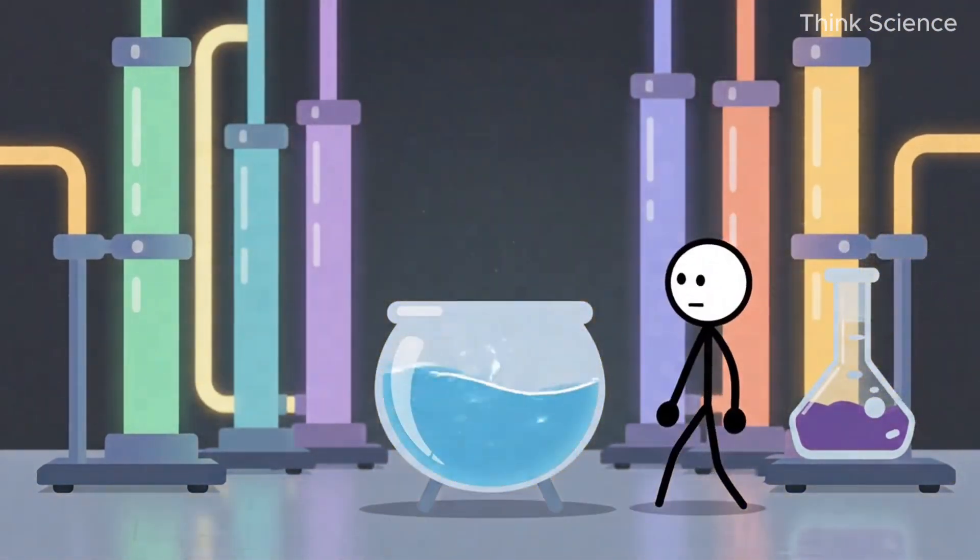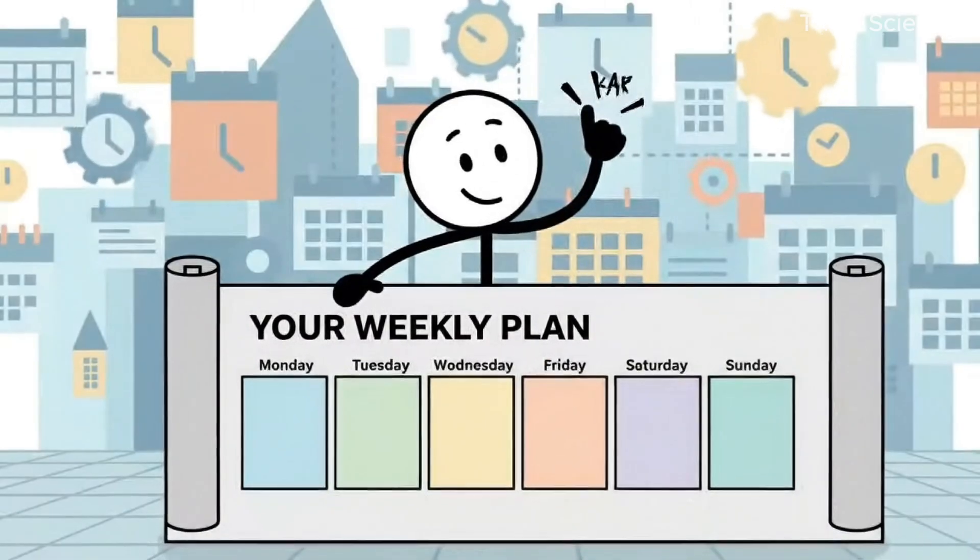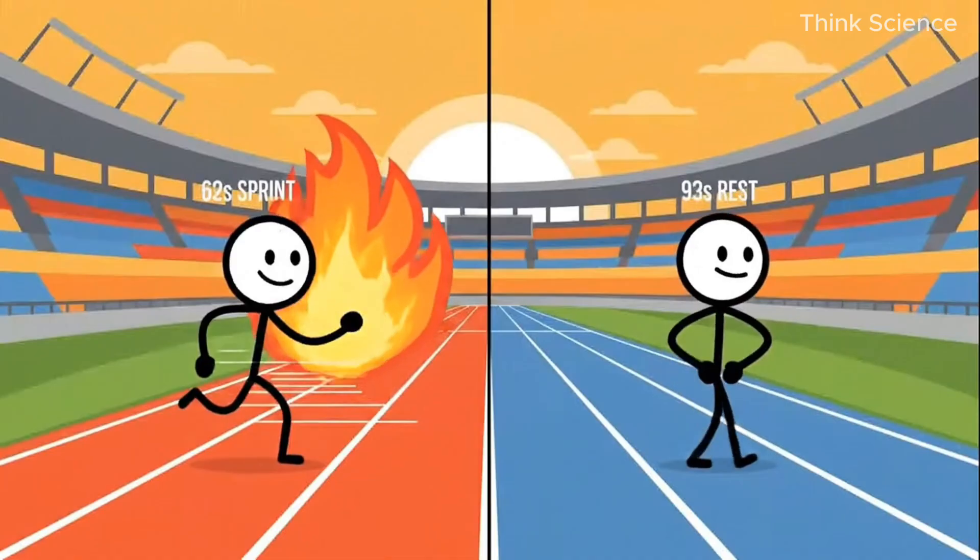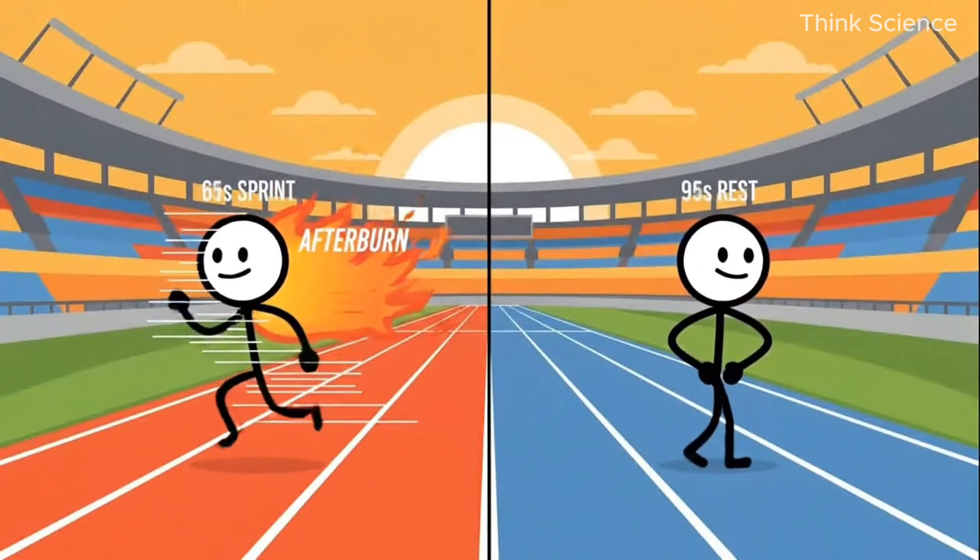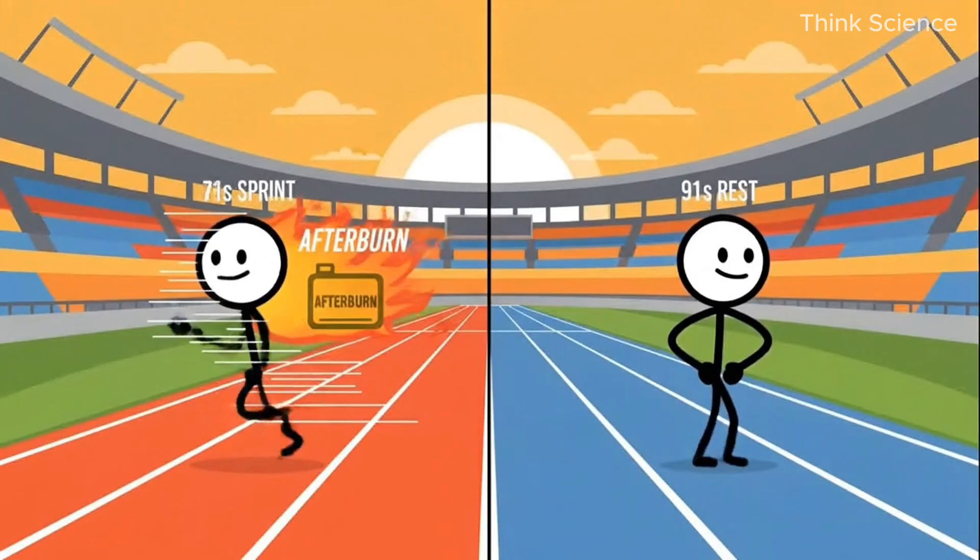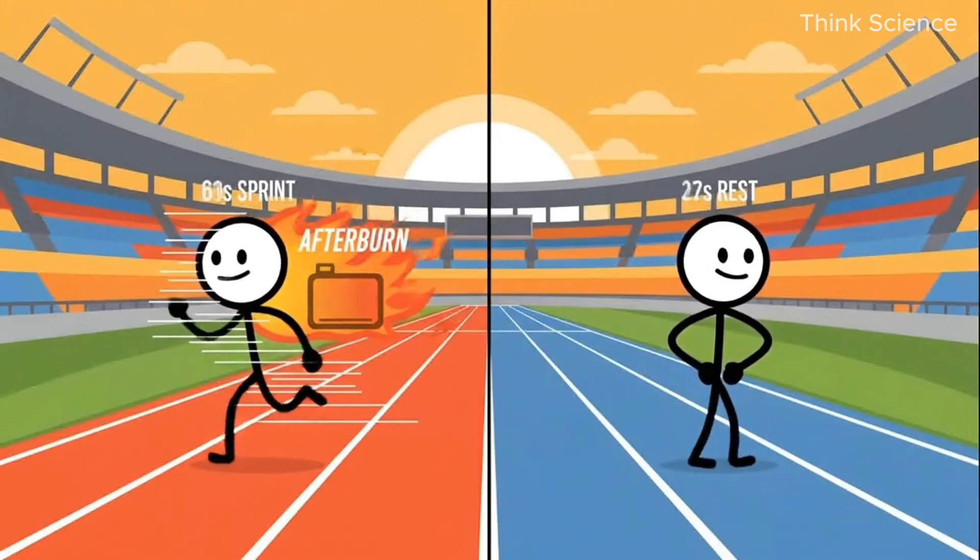Let's finally build your weekly plan—the one that actually uses all this science in the real world. Start Monday with high-intensity intervals. One-minute sprints followed by 90 seconds of rest. This rapidly drains glycogen and creates the biggest afterburn effect.